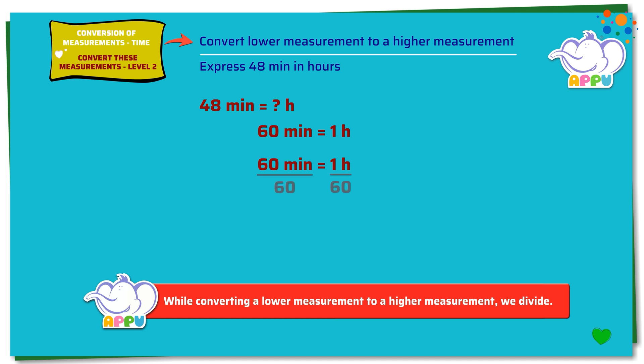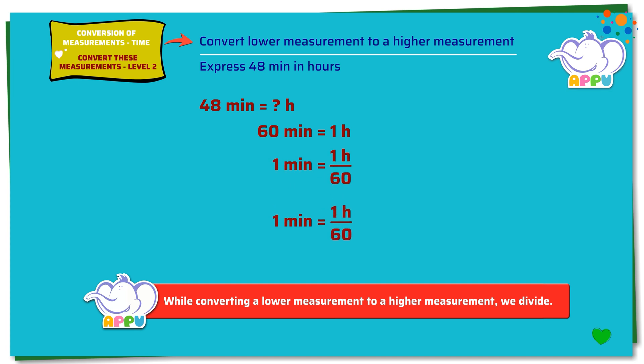Dividing both sides by 60, we get 60 minutes divided by 60 equals 1 hour divided by 60. 60 divides 60 once, so we get 1 minute equals 1 hour divided by 60. To find how much is 48 minutes, we multiply both sides by 48: 48 minutes equals 48 times 1 hour divided by 60.